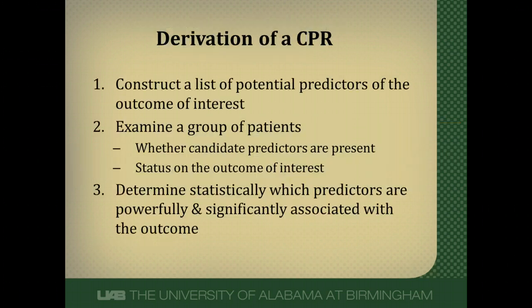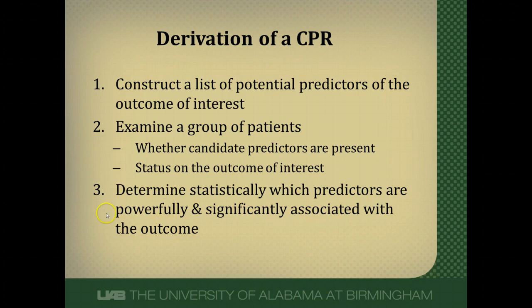In the derivation phase, you construct a list of potential predictors for whatever outcome you're interested in — whether diagnostic probability or a prognostic tool. You look at a group of patients, identify which predictors are present, observe their outcomes, and then do statistical testing to find what is powerfully and statistically significantly associated with the outcome. We want strong associations because weak ones won't be useful.